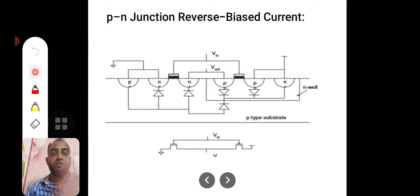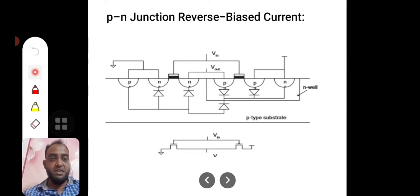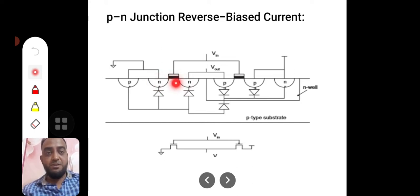And the drain of the N-device and the source of the P-device are connected to get the output. For a P-channel or PMOS transistor, the substrate should be N-well. This N-well accommodates a PMOS transistor. The channel which will be developed between drain and source is of P-type, so this is called a PMOS transistor. Here, the channel that forms between drain and source is of N-type because the whole substrate is P-substrate. In the P-substrate, an N-channel forms, so this is an NMOS transistor.